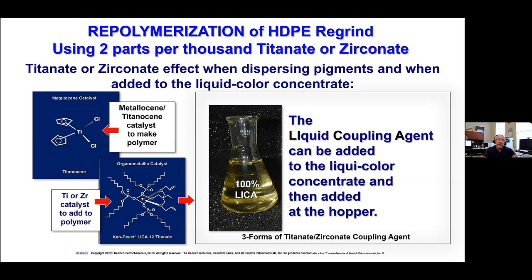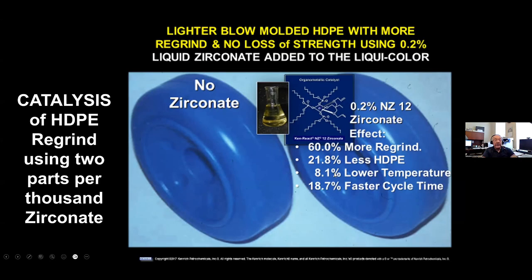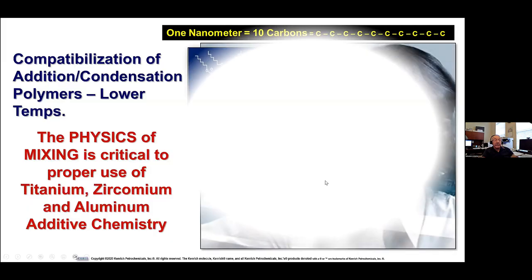The liquid coupling agent can be added to the liquid color concentrate and then added to the hopper — there are different ways to do it. So long as you're getting it solubilized into an organic phase first and well dispersed before it sees the graphene, you can use that organic phase to attack the interface of the graphene. In an HDPE blow-molded material with the coupling agent added right to the liquid color, they were able to get 60% more regrind, use 21.8% less HDPE — in other words thinner gauge — at lower temperatures and faster cycle times.